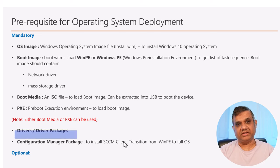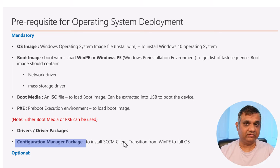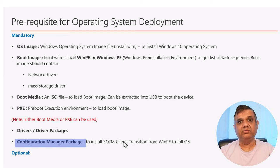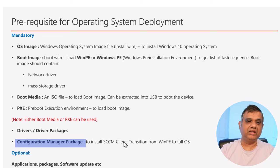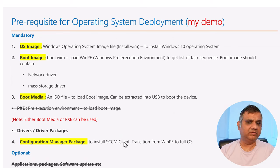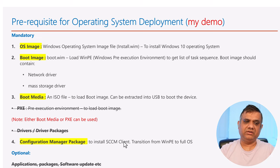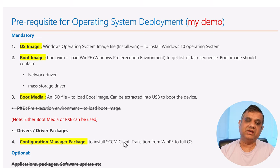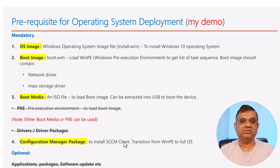Finally, the Configuration Manager package is the most important thing for the SCCM task sequence. It's not just installing the SCCM client - it's actually transitioning your device from WinPE to full OS. You can't skip this step; if you think you don't need the SCCM client package, the task sequence will fail. Optional components include applications, packages, and software. For my demo I'll keep things simple: OS image, boot image, boot media, SCCM package, and maybe one or two applications.